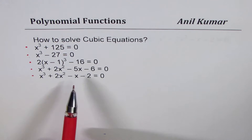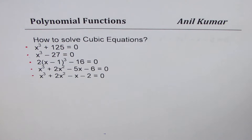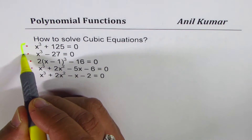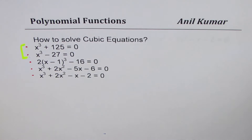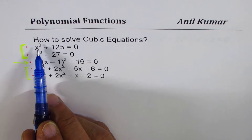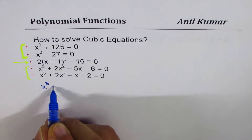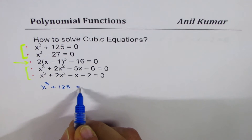The strategies adopted are different for these types of questions. We have one strategy for the first two, another strategy for the third one, and a third kind of strategy for the last two polynomials. This video may run into 10-15 minutes, so have patience. Let's begin with x³ + 125 = 0.